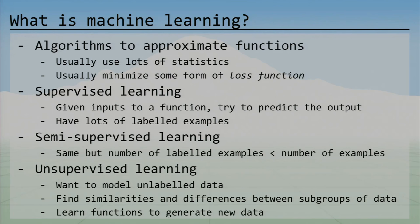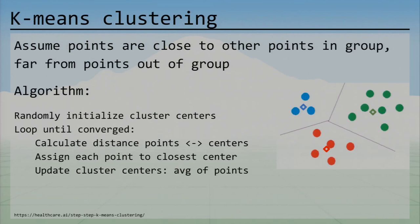Machine learning is in general algorithms to approximate functions. We have a few different classes: supervised learning where you have labeled examples, semi-supervised learning where you have lots of training data but not all examples are labeled, and unsupervised learning where we want to model completely unlabeled data and just find patterns in it.